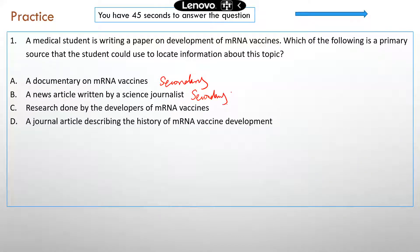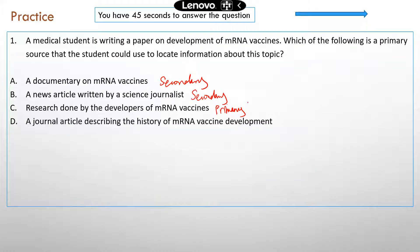Option C: research done by the developers of mRNA vaccines. That's the correct answer — that's the primary source. Because these people conduct the research themselves, they have first-hand information about the development of mRNA vaccines.